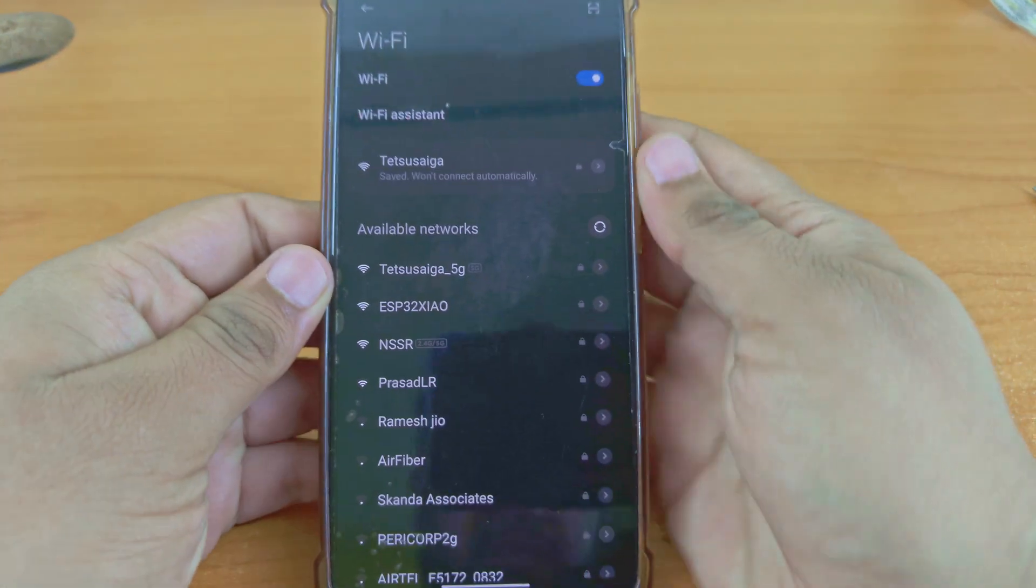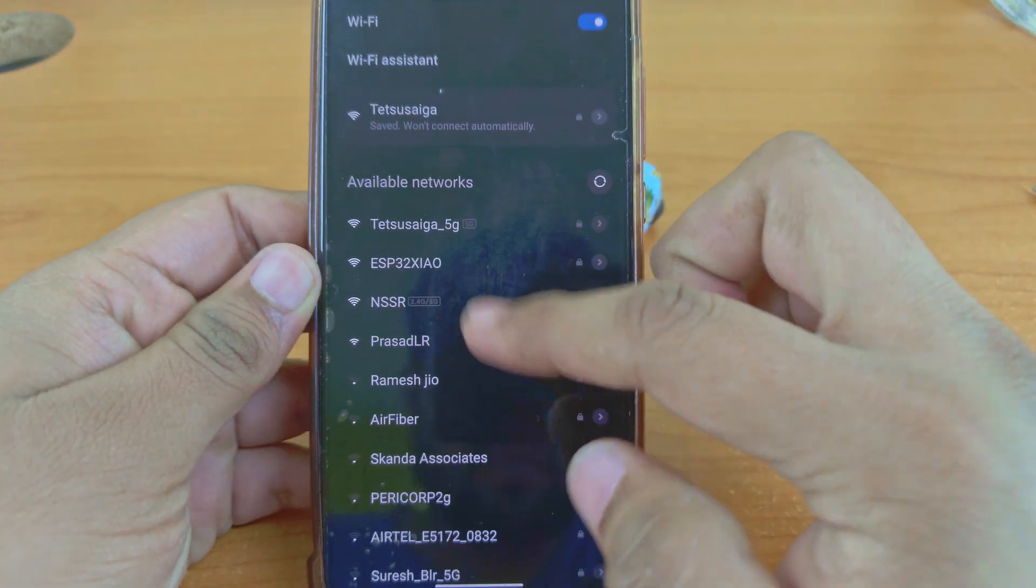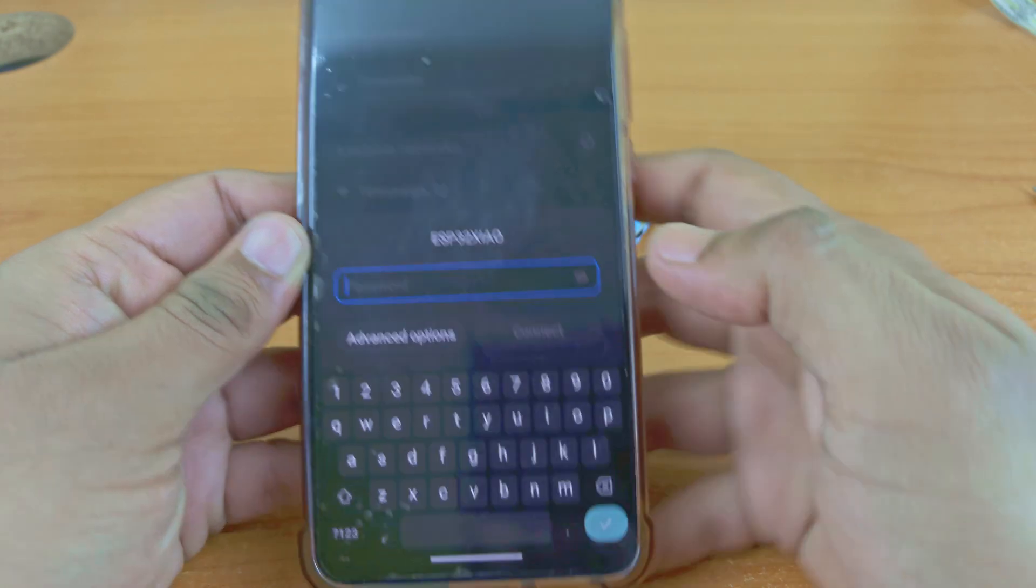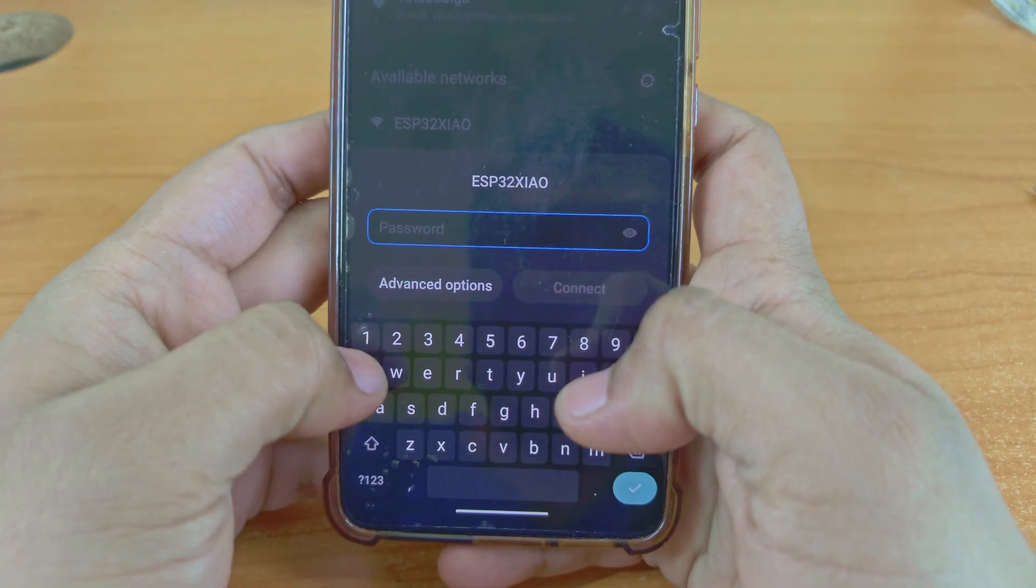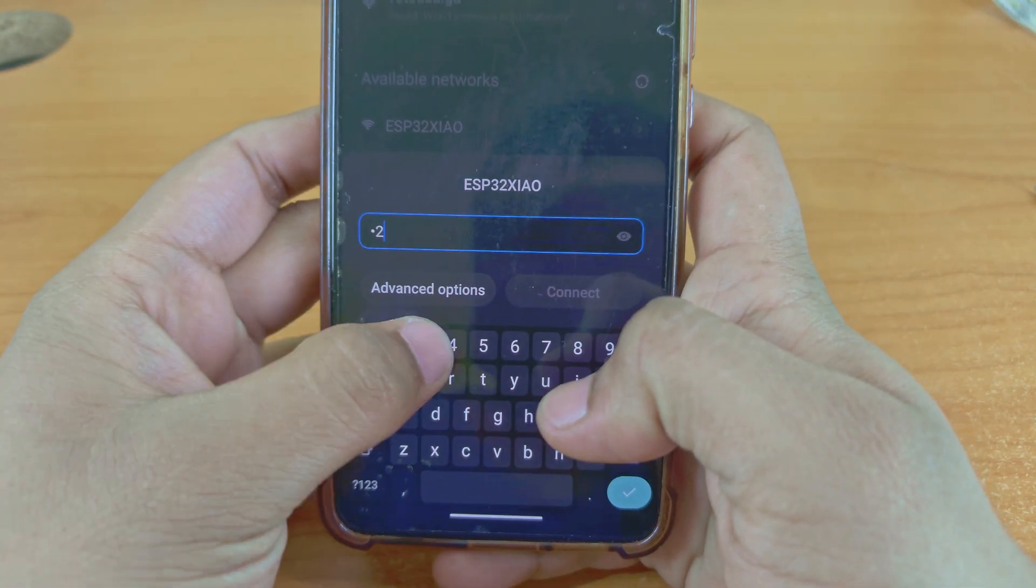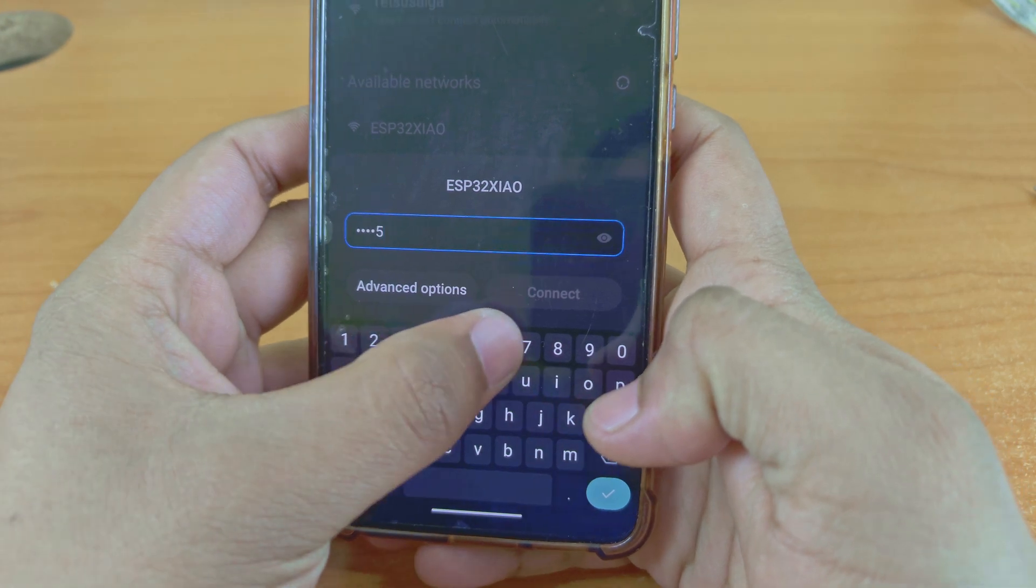On your mobile, open Wi-Fi settings and scan for networks. Find and connect to the ESP32 Xiao network. The password is 12345678 if you have not changed it in the code.